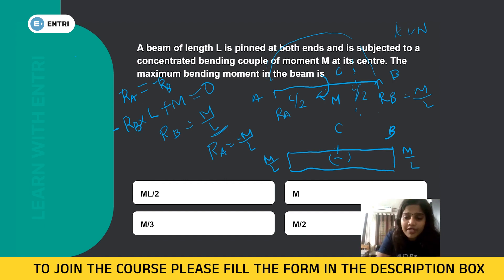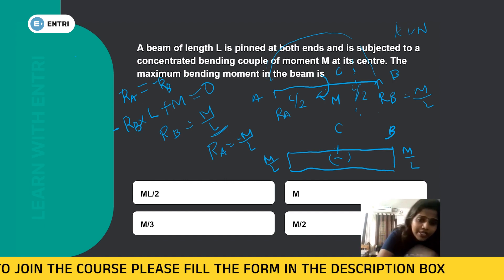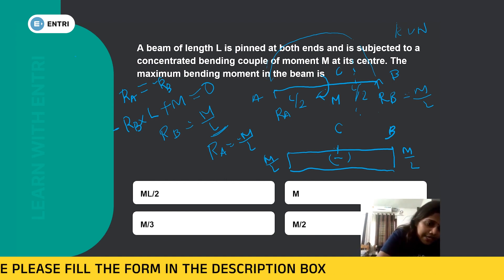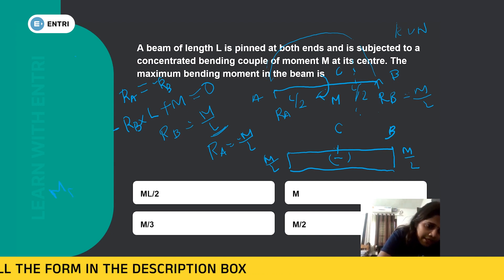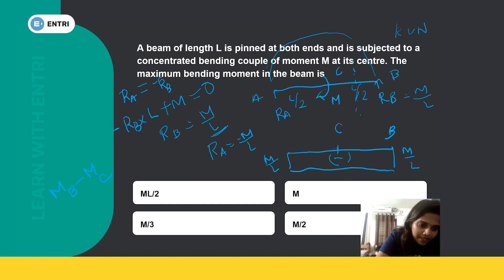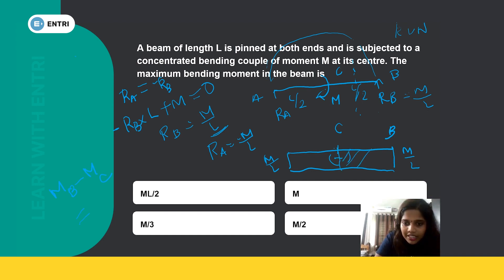The moment difference between two points is equal to the area of the shear force diagram between those two points. Applying that equation: Mb minus Mc equals the area of the shear force diagram between points B and C. Using the shear force diagram area between B and C to find the bending moment.